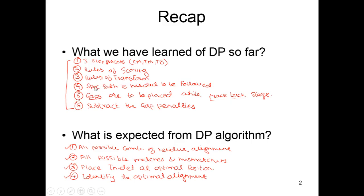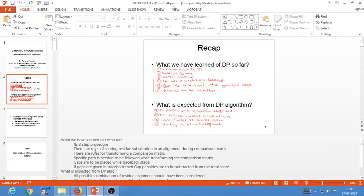You also know the path that needs to be followed during transformation — we first transform the first column, then the first row, then move diagonally, then transform the second column, then the second row, and subsequently reach the end terminus of our protein sequence. In this lecture we would focus on the remaining two aspects: how do we provide gap penalties and how do we calculate the final scores. That is what is going to be the main focus of today's lecture.